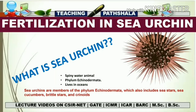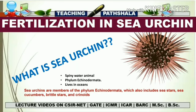Let's start with the basics: what is a sea urchin? It is a spiny water animal belonging to the phylum Echinodermata that lives in the ocean. As you can see in the figure, there is a spine-like structure all over its surface. Sea urchins are members of phylum Echinodermata, which also includes the sea star, sea cucumber, brittle star, and crinoids.